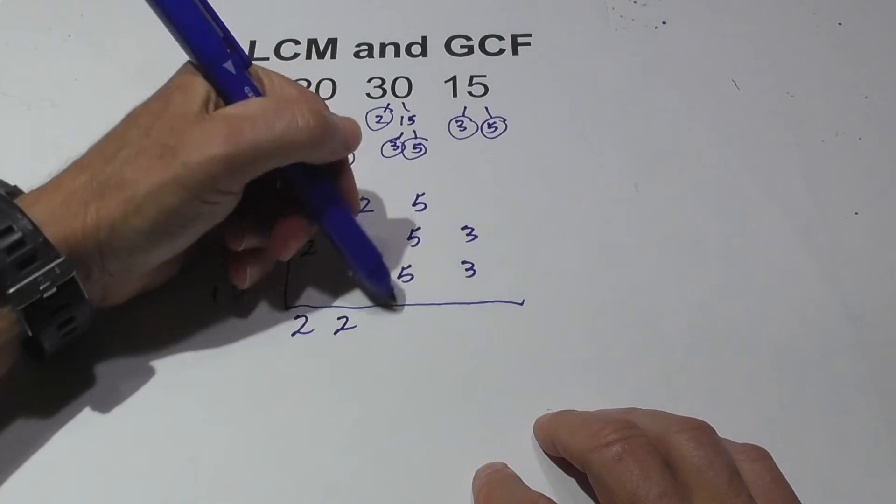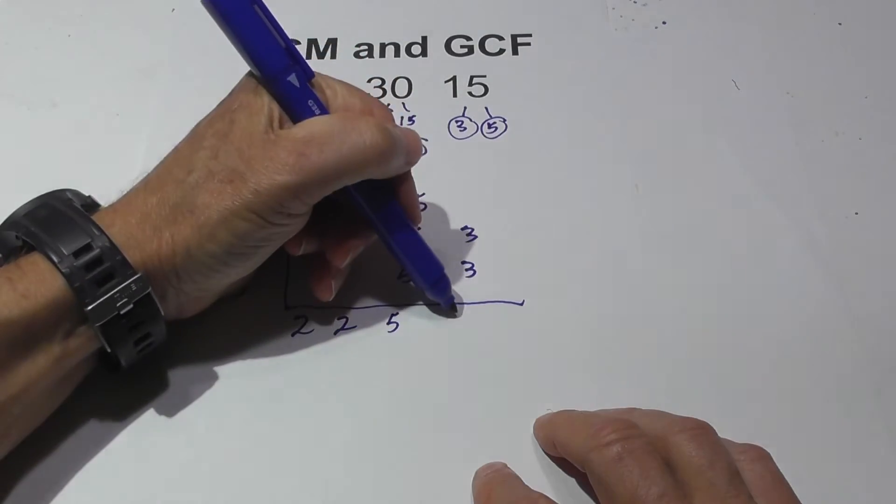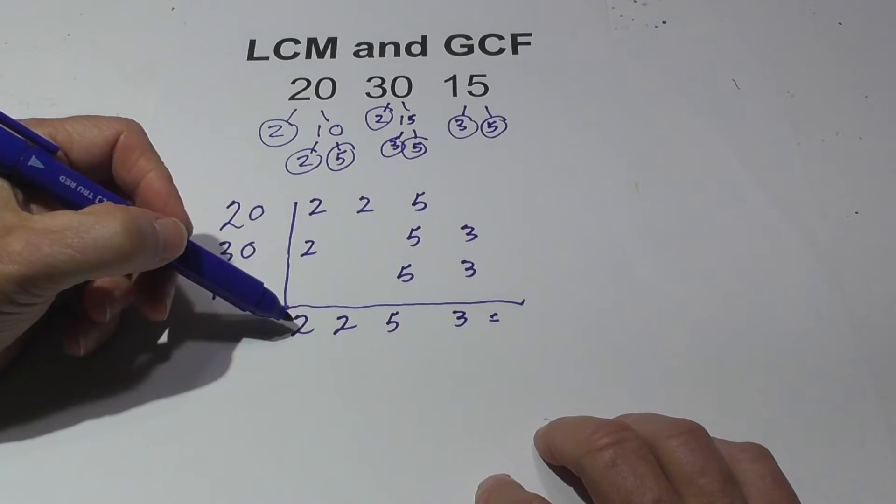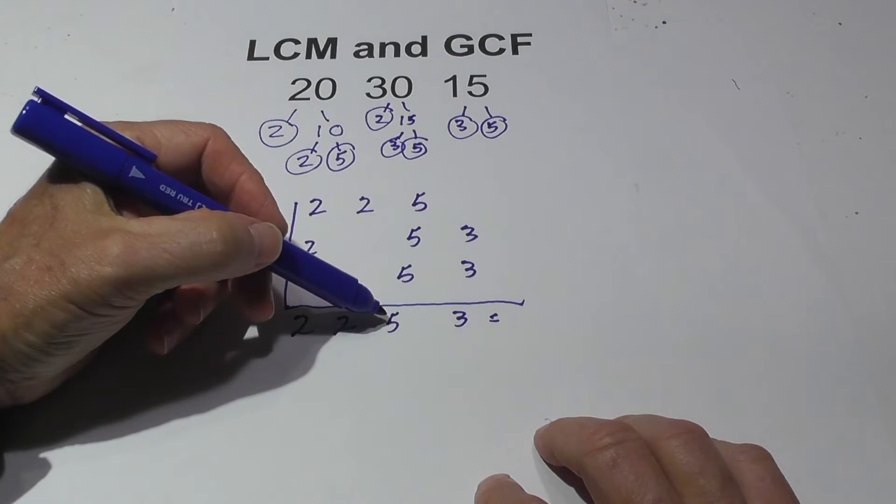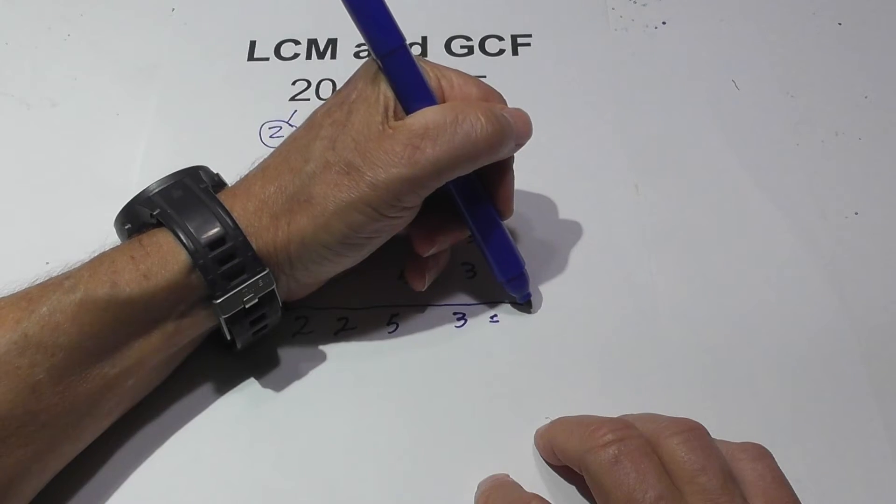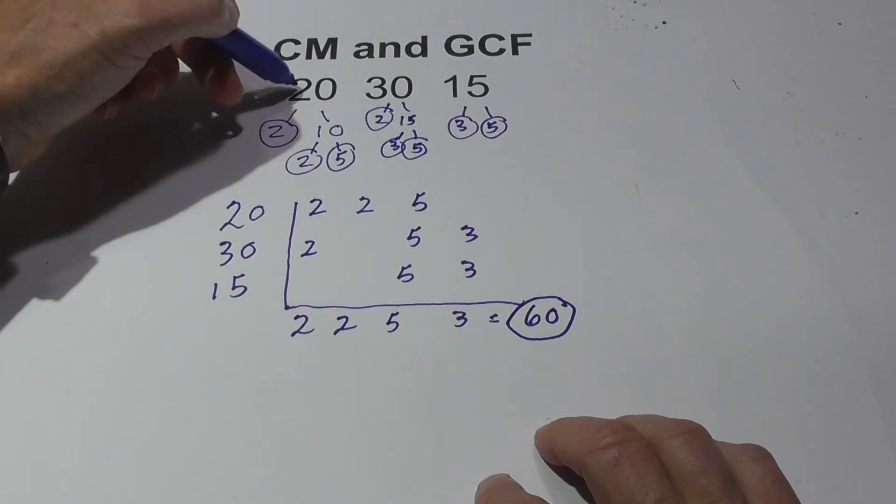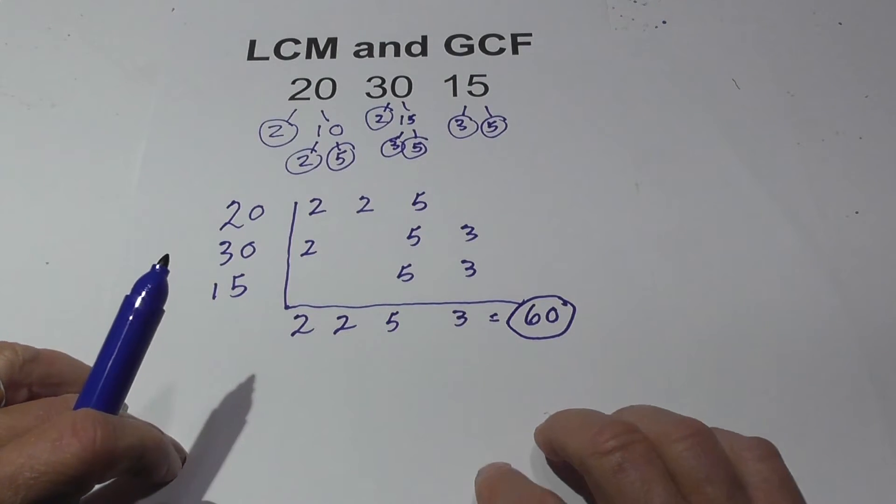I'm going to bring down 1, 2, 1, 5, and 1, 3. Then all you do is multiply this together. 2 times 2 is 4, then 20, then 20 times 3 is 60. So the LCM for 20, 30, and 15 is 60.